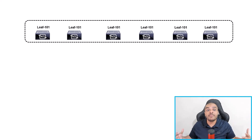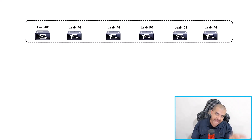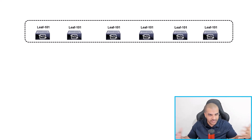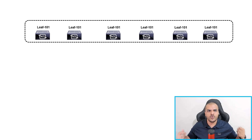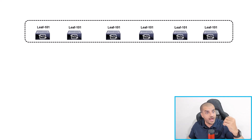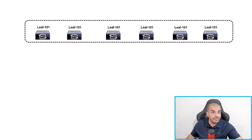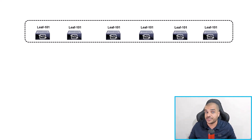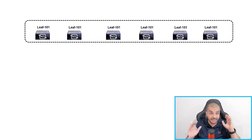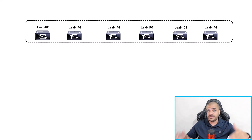Now that the APIC has discovered its fabric and all switches are neighbors, the next step is to show you the power of automation using access policies. In short: get your servers and endpoints connected to the leaf switches. Remember this rule — everything gets connected to the leaf switches. Spines connect to other devices, but servers, whether physical or virtual, connect to the leaves.